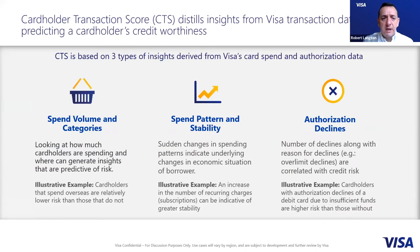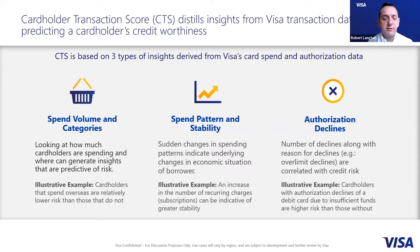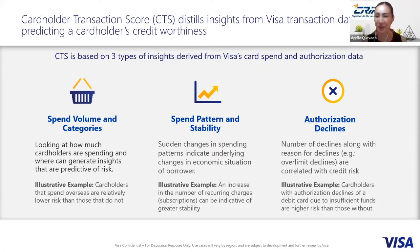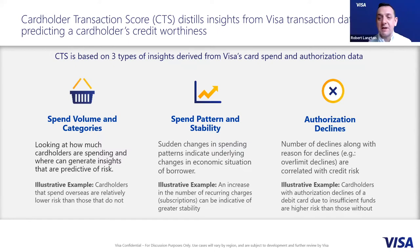The risk score was developed from a starting sample of 150 million credit and debit cards, looking at attributes indicative of credit risk. They fall into three broad categories. The first is spend volume and categorization — Visa has an advanced categorization engine where every single merchant, whether e-commerce or face-to-face, has a merchant category. We applied those merchant categories at spend level to every card to generate insights. Cardholders that spend overseas are relatively lower risk than those that do not.